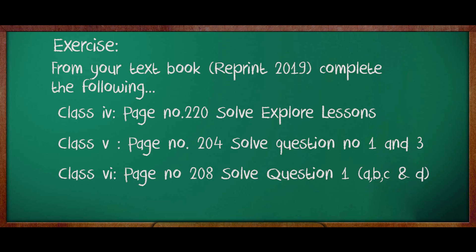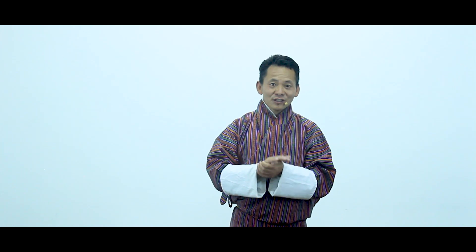I hope you have understood. Now, to check yourself whether you have understood or not, I have a set of questions from the textbook reprinted in 2019. Class 4, turn to page number 220 and solve the explorer lessons. For Class 5 students, turn to page number 204 and solve question number 1 and 3. For Class 6, turn to page number 208 and solve question number 1, sub-questions A, B, and C. I hope you got what I have taught and you have understood what is mean, median, and mode and you know how to calculate or find those things.